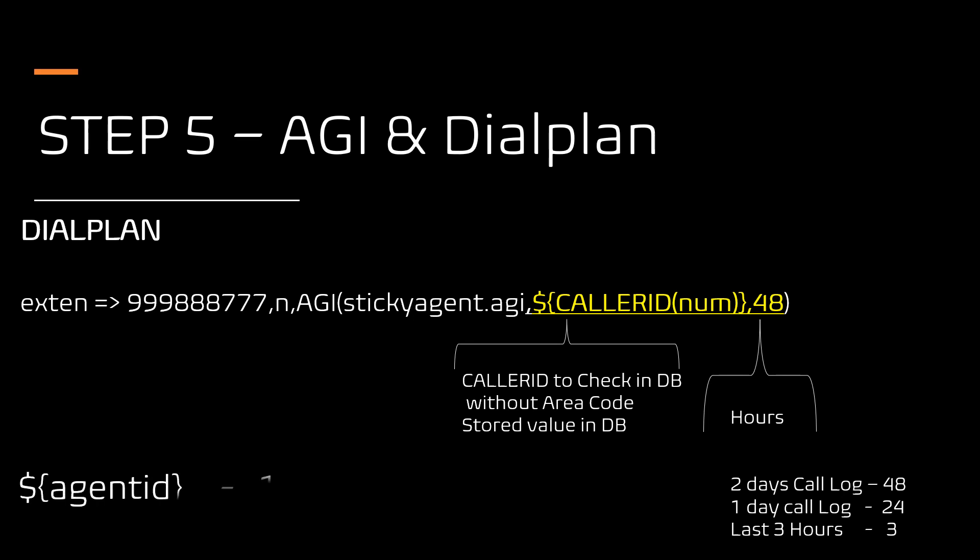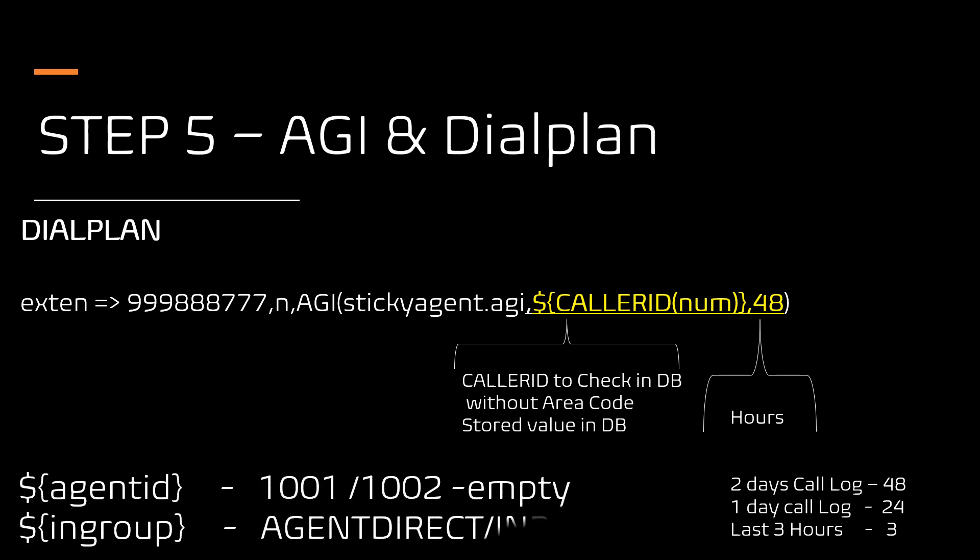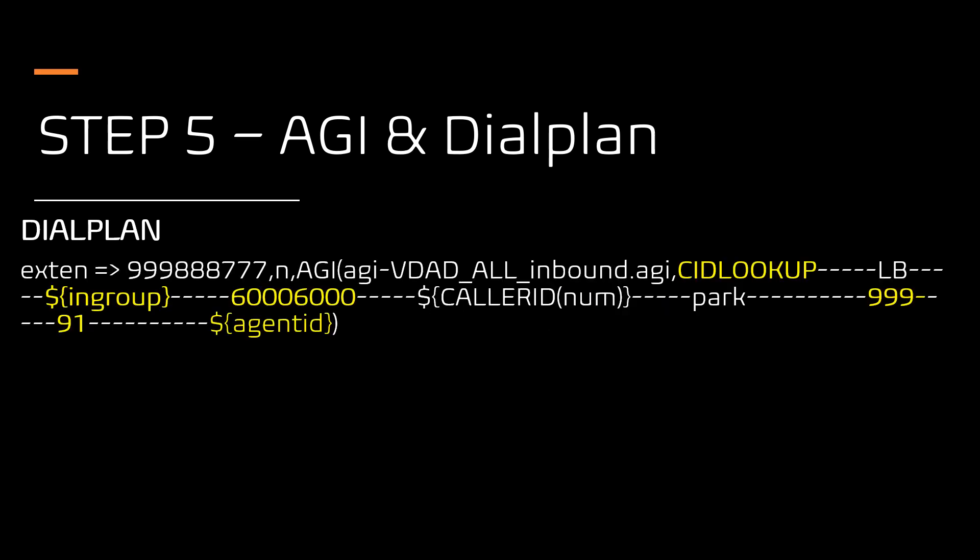This dial plan will query the database and assign two channel variables: one is the agent ID with the sticky agent name or number (empty if no result), and two is the INGROUP variable set to either 'Agent Direct' or 'INBOUND' if the agent ID is empty. These variables are used in the next line of the custom dial plan, which routes the call based on the variables received from the previous dial plan.